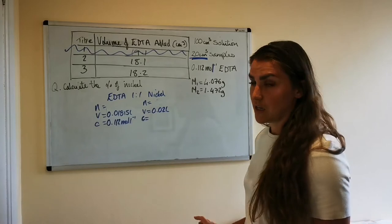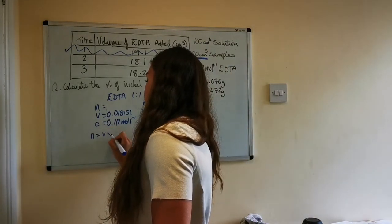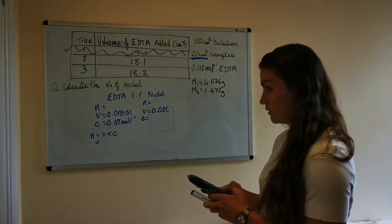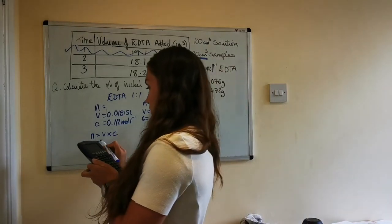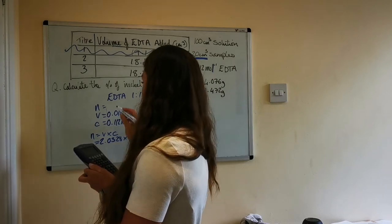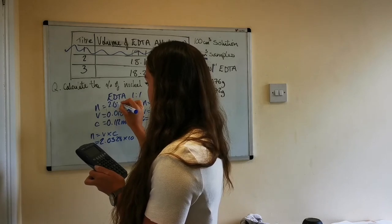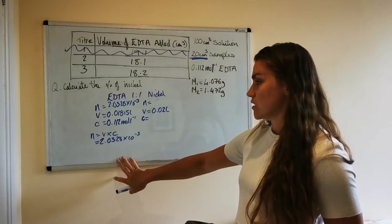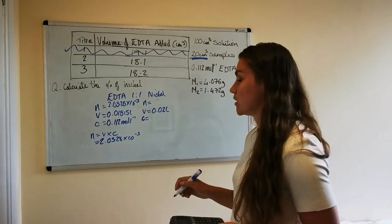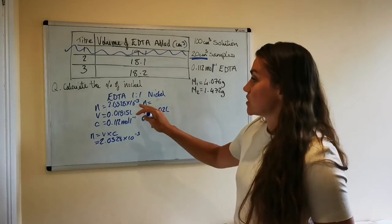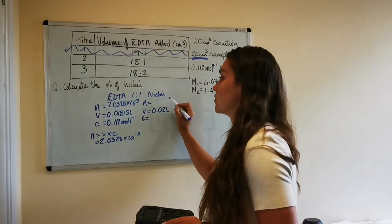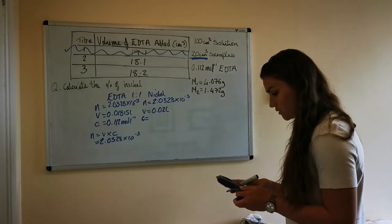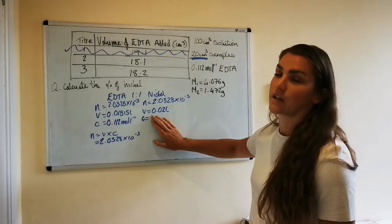So what we can see so far is that the only thing we can actually calculate here is the number of moles of EDTA. So N = V × C, so let's get that into the calculator. Okay so that gives you 2.0328 × 10⁻³. It's important that you show your working for this stuff because if you just accidentally write down the wrong number you can still pick up marks for showing that you know how to calculate these things. So because it's a one-to-one ratio, that means if we had this many moles of EDTA we would have had the same number of moles of nickel, so 2.0328 × 10⁻³.